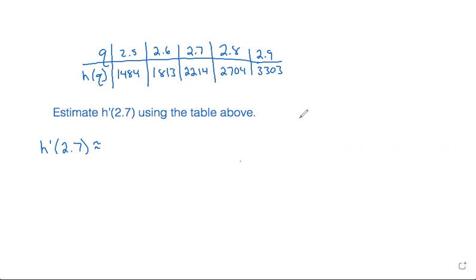When we have a table of values, what we can do to find that is to estimate the slope using the slope equation of y2 minus y1 over x2 minus x1.